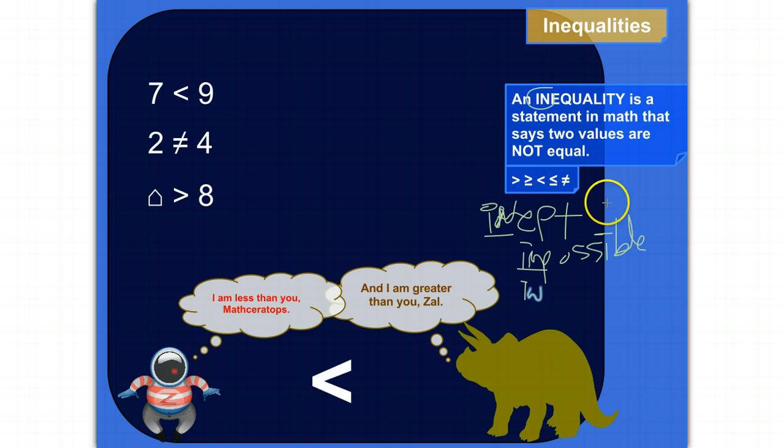And there's different kinds of ways of being not equal in math. So for example, 7 is not equal to 9. Well, we can get more specific. We can say 7 is less than 9. The way in which it's not equal is that it's less than 9. So here's a less than sign.